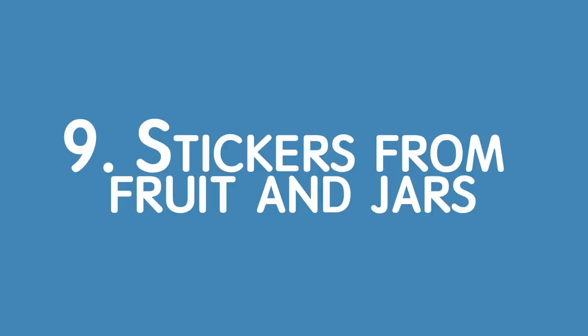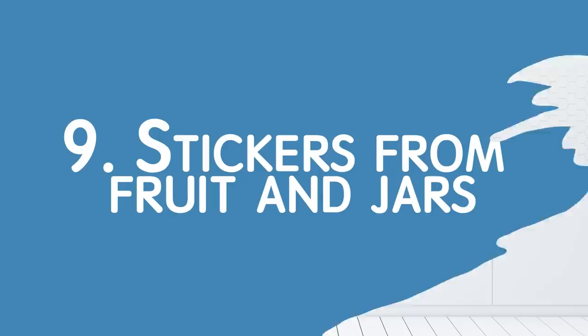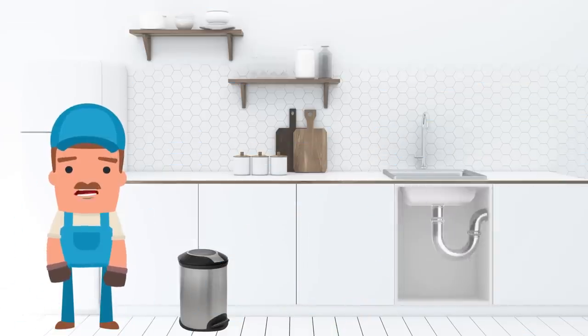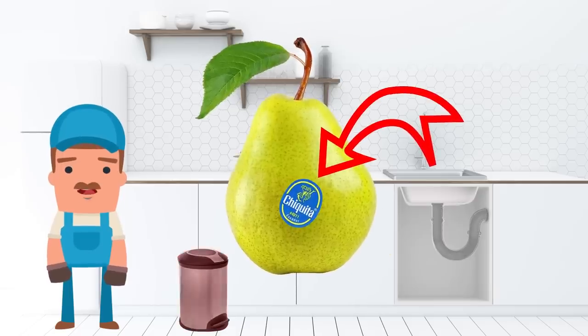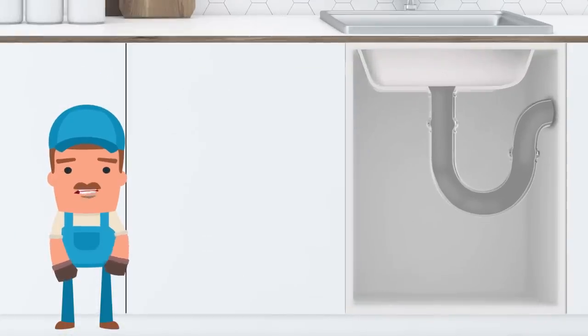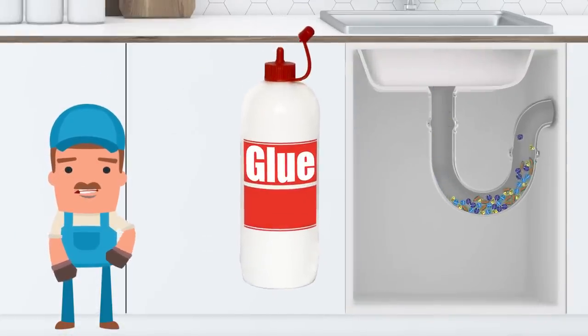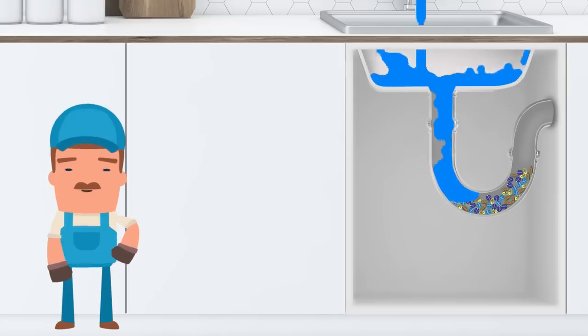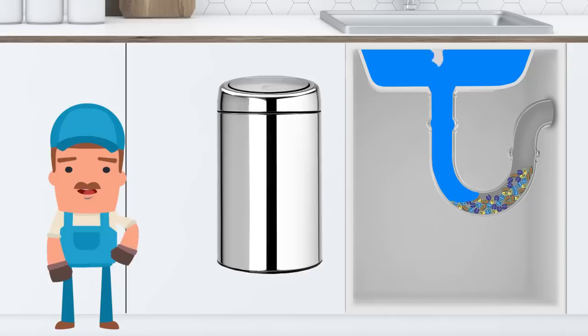Number 9. Stickers from fruit and jars. Even if the stickers are really small, you should throw them away in the trash instead of down the drain. The problem is that they have glue on them, and the stickers themselves are made of materials that take a very long time to decompose. It's better to spend a couple of extra seconds to walk to the trash can and get rid of them properly. It's definitely better than getting a clog later.